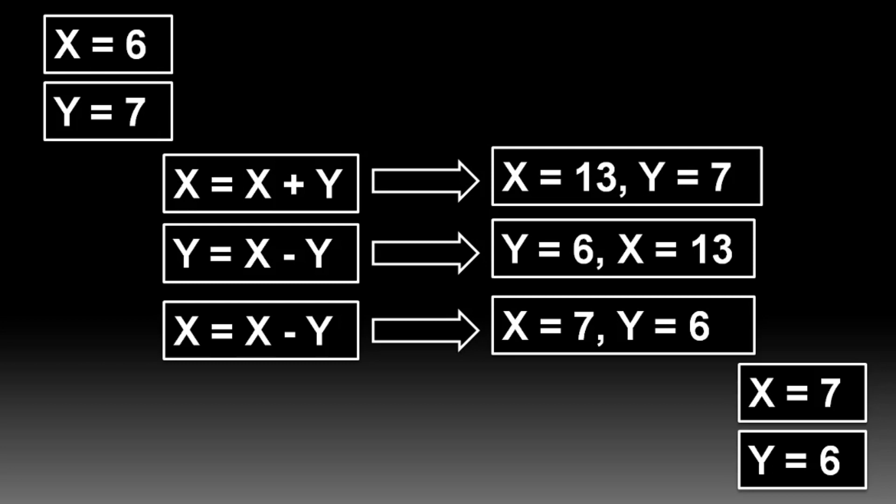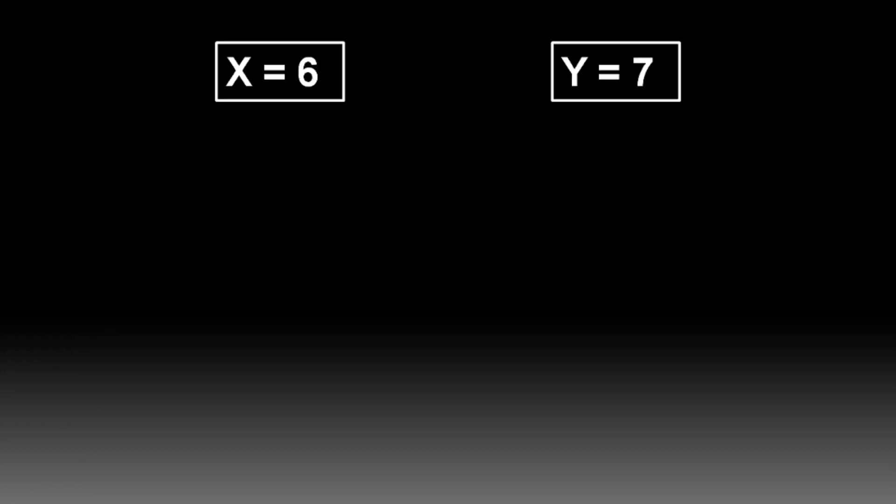Before coding this method, let's also talk about the next method: the product-division method. These two methods are similar. Here we have X equals 6 and Y equals 7. This process comprises one multiplication and two divisions. In this method we replace addition with multiplication and subtraction with division.